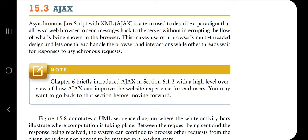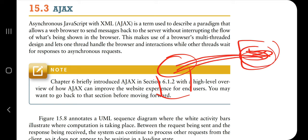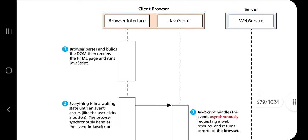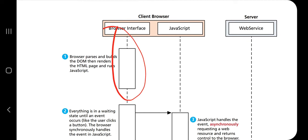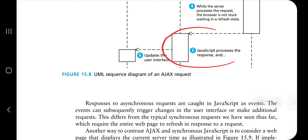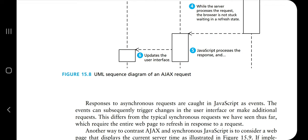Ajax stands for Asynchronous JavaScript with XML. It is a term used to describe a paradigm that allows a web browser to send messages back to the server without interrupting the flow of what is being shown in the web browser. Ajax sends requests to the server using parallel thread execution, so the existing page flow is not interrupted. In the sequence diagram, the browser sends a request asynchronously to the server, the update happens asynchronously, and it does not disturb what is currently displayed on the screen.